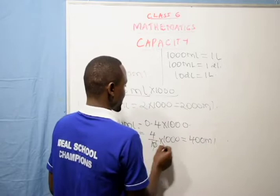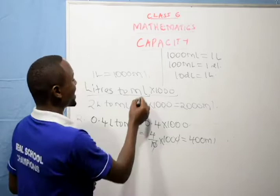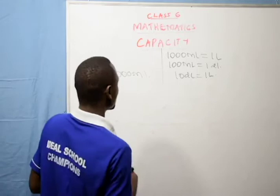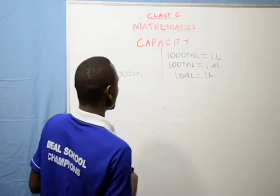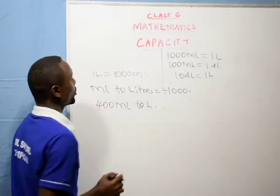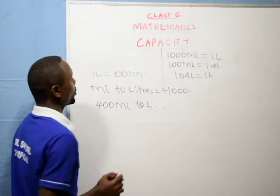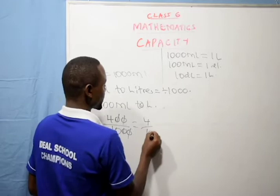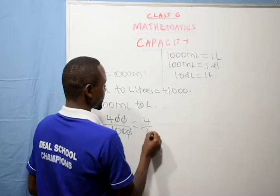The vice versa is the same. When converting milliliters to liters, we divide the milliliters by 1,000. For example, convert 400 milliliters to liters: because 1 liter is equivalent to 1,000 milliliters, we divide by 1,000. So 400 divided by 1,000 is the same as 4 over 10, which is 0.4 liters.